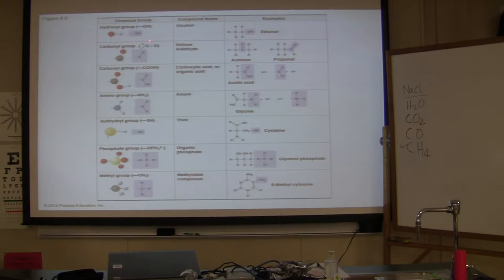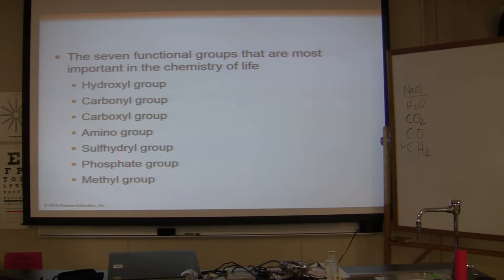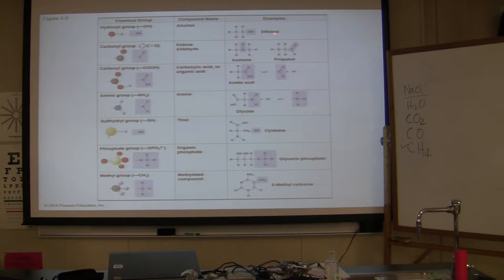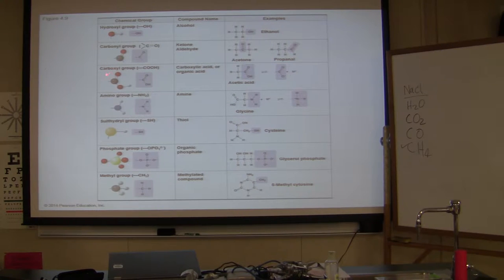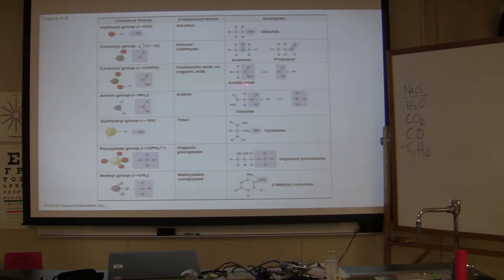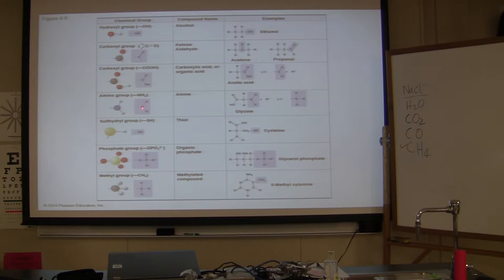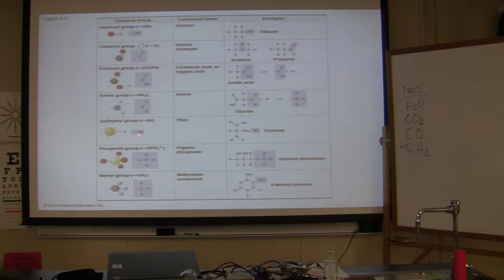Hydroxyl group is OH — example: ethanol. Carbonyl group is C double bond O — example: acetone. Carboxyl group is C double bond O plus OH — example: acetic acid. Amino group has nitrogen with two hydrogens — example: glycine, a type of amino acid. Sulfhydryl group is SH, sulfur and hydrogen — example: cysteine.